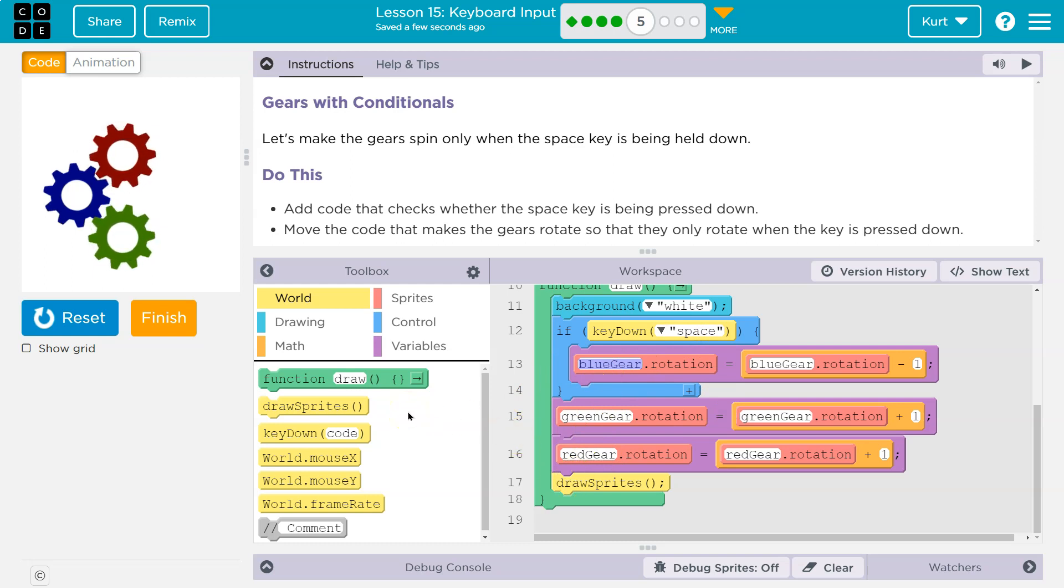Now watch when I press the space. Instantly, the blue gear is moving because now if key down space is true, I'm holding the space. The computer says true. Oh, okay. This is true. So it will run the code inside, which is this statement right here, which is minusing one of blue rotation, making it look like it's moving counterclockwise.